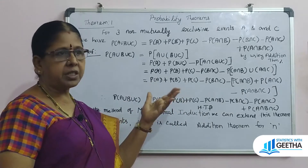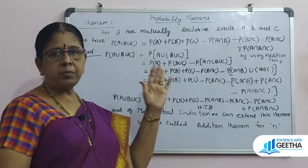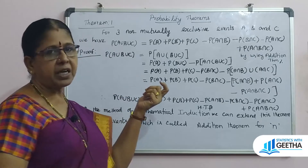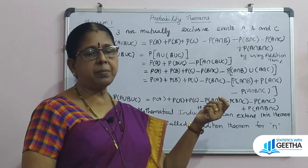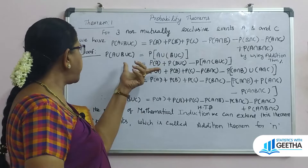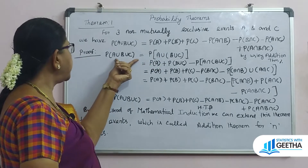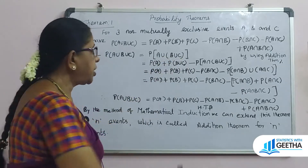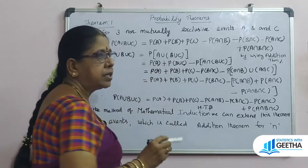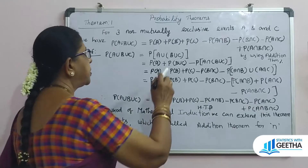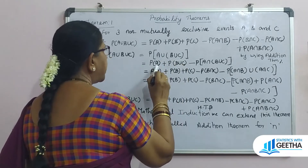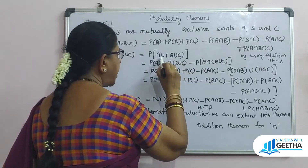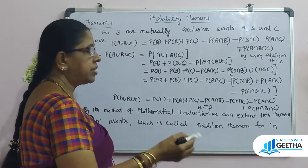How to prove this theorem? By the method of mathematical induction. For two events, we know from the addition theorem that P(A union B) equals P(A) plus P(B) minus P(A intersection B). Using that rule, we find P(A union B union C) by treating it as two events: P(A) plus P(B) minus P(A intersection B), then union with C.